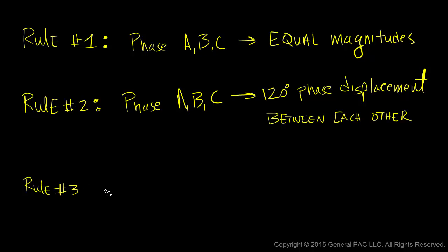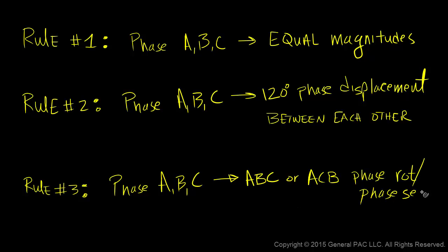Rule number three. Phase A, B, and C voltages or currents must have either an ABC or ACB phase rotation or phase sequence and must rotate in a counter-clockwise direction.